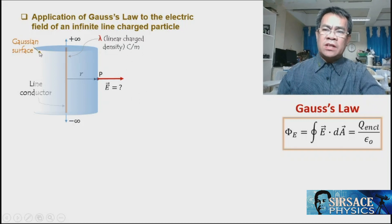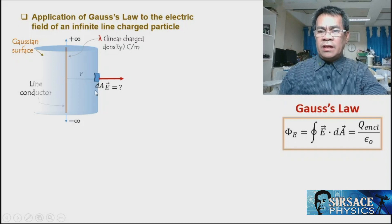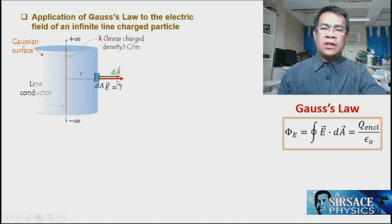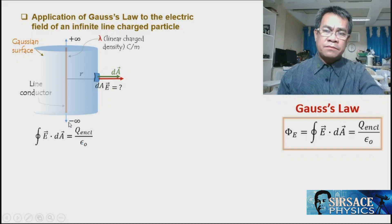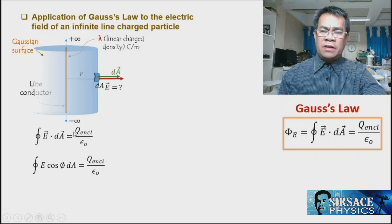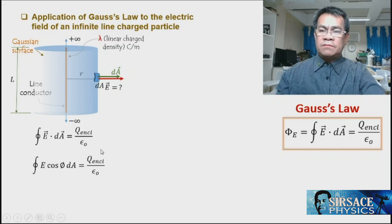We consider a small infinitesimal element of the cylinder surface. The angle between the differential normal vector and the electric field is zero. Using the formula — the closed integral of E dot dA equals the total enclosed charge over permittivity — and expanding using magnitudes of the two vectors, we have E·cos(θ)·dA = q_encl / ε₀.